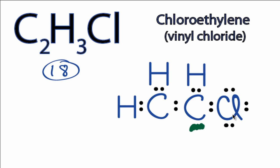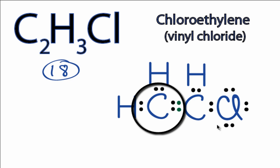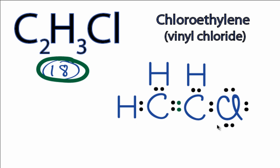Let's move these two valence electrons right here to the center. This carbon still has eight valence electrons, and now this carbon has eight valence electrons as well. We're still using only 18 valence electrons, so we've used all the valence electrons and filled the outer shells for all the atoms in C2H3Cl.